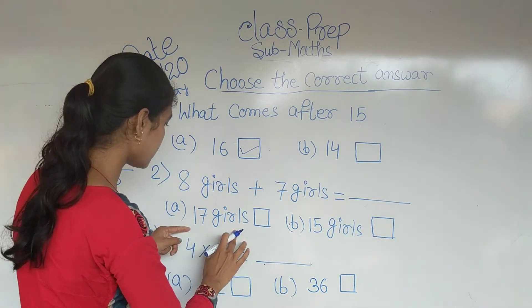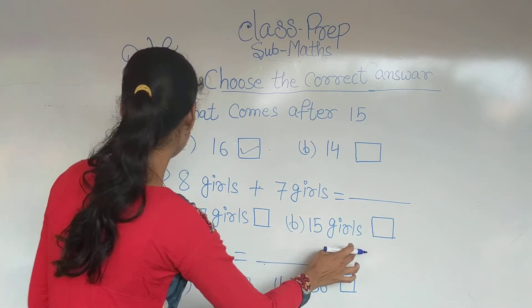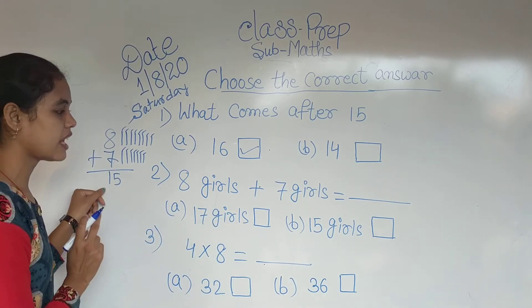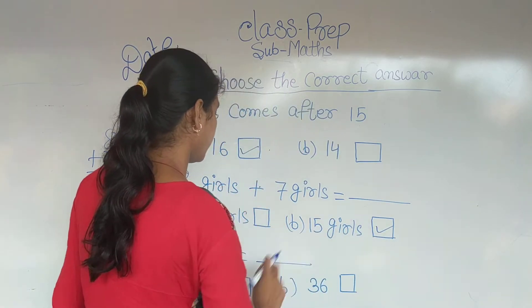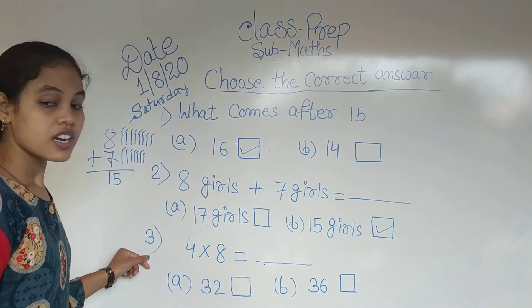To yahaan dekhiye, option A: 17 girls. Option B: 15 girls. Hum log ko add karke yahaan kitna mila hai? 15. So correct answer is 15 girls.